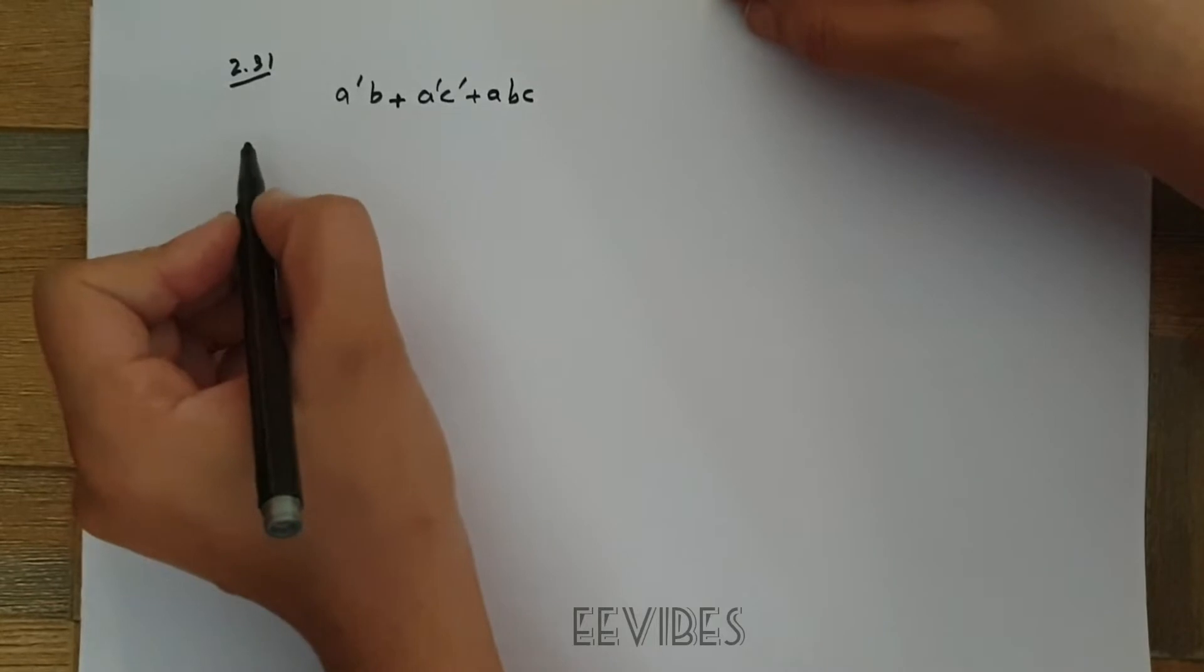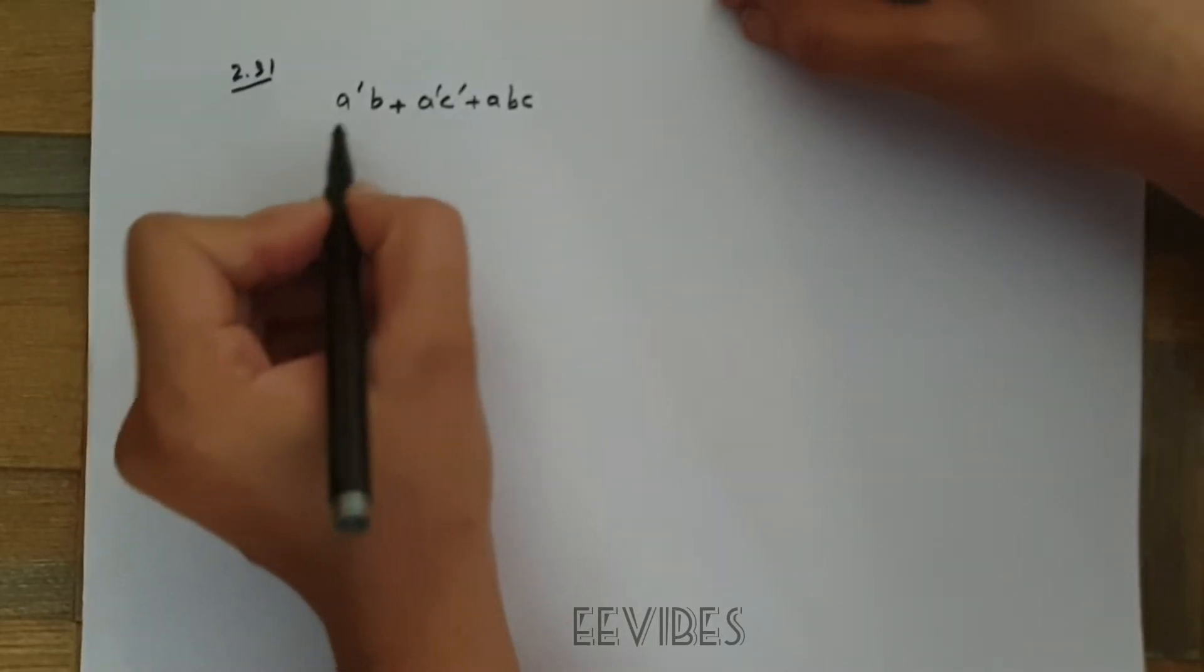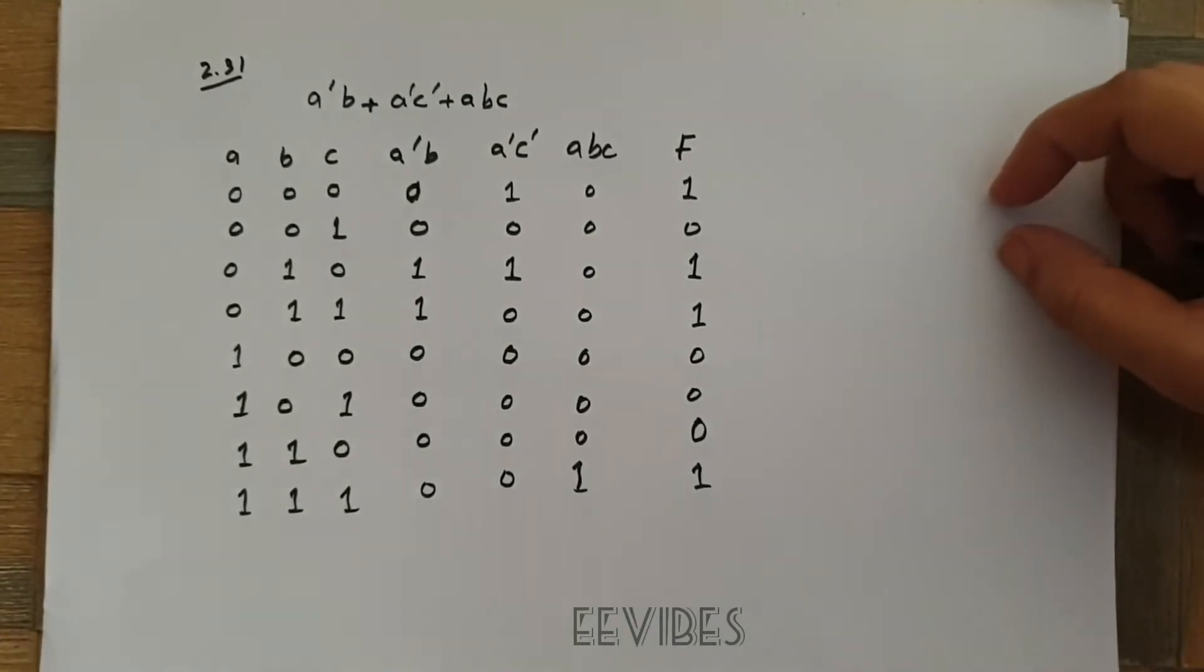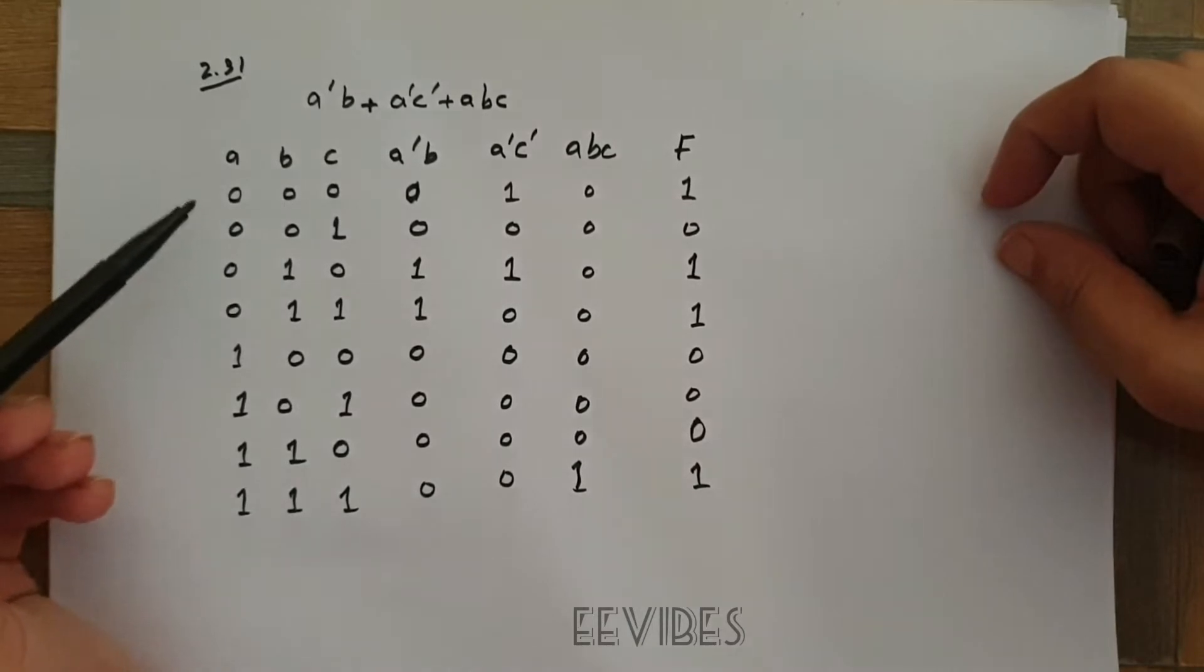First of all you need to see there are three variables involved in this expression, so I will construct the truth table for the three variables. You can simply make the combinations. So what I have done, I have constructed a three variable truth table with all possible combinations.